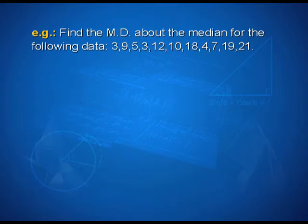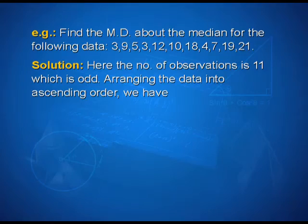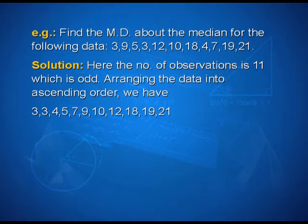Now let us look at one more example. Find the mean deviation about the median for the following data: 3, 9, 5, 3, 12, 10, 18, 4, 7, 19, 21. Here the number of observations is 11, which is odd. Arranging the data in ascending order we have: 3, 3, 4, 5, 7, 9, 10, 12, 18, 19, 21.